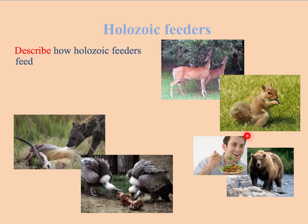Animals that eat both plant material and animals are called omnivores. And then there's another group like the woodlice and other little organisms that eat dead, decaying matter — they're called detritivores.